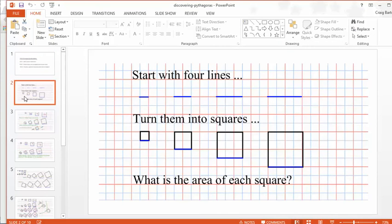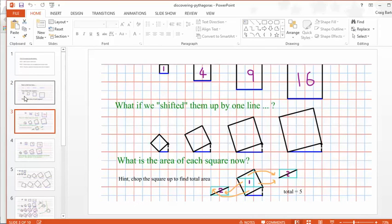If we have a look at the first PowerPoint, it's a really simple setup. All the students need is square paper. And as the instructions say: start with four lines, turn them into squares, work out the area of each square. So hopefully they get 1, 4, 9, and 16. And then what happens if we shifted the squares up by one line? And this terminology of shifted is going to be very important in this mini-investigation.